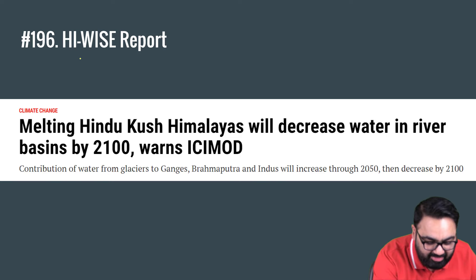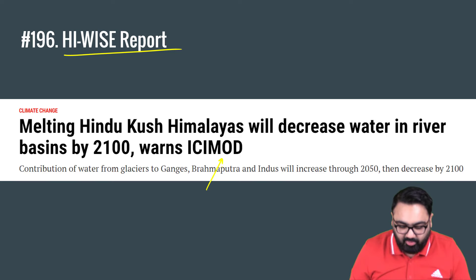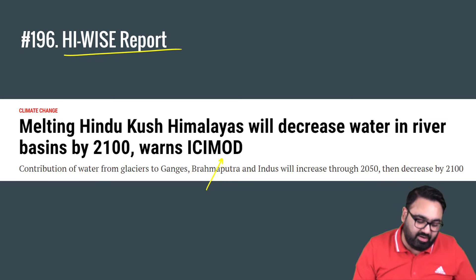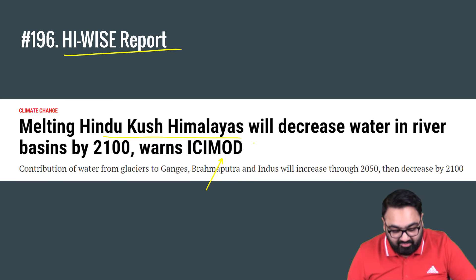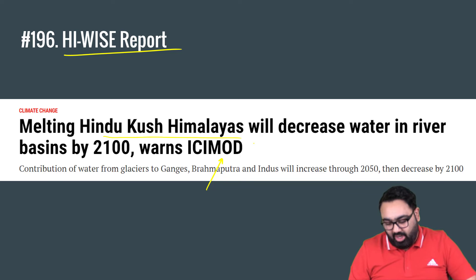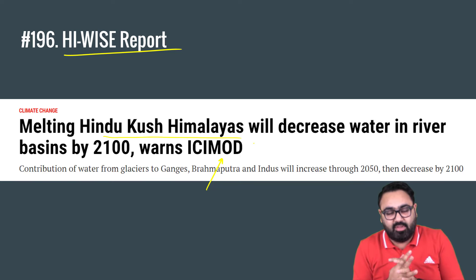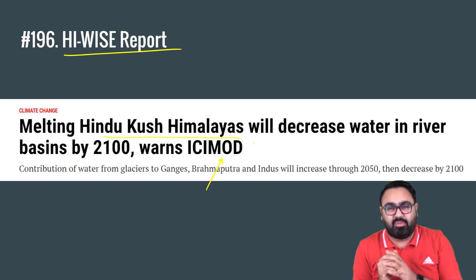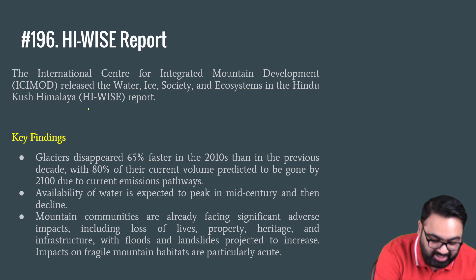Next, we will talk about a report called the High Ice Report published by ICIMOD. The report brings bad news: the mighty Hindu Kush Himalayas might see a decrease in water supply by 2100. This is not something surprising — most of the mighty mountains around the world that supply water to major rivers through their ice caps are witnessing a reduction in water storage. The same is being reported for the Hindu Kush mountains in this High Ice Report.